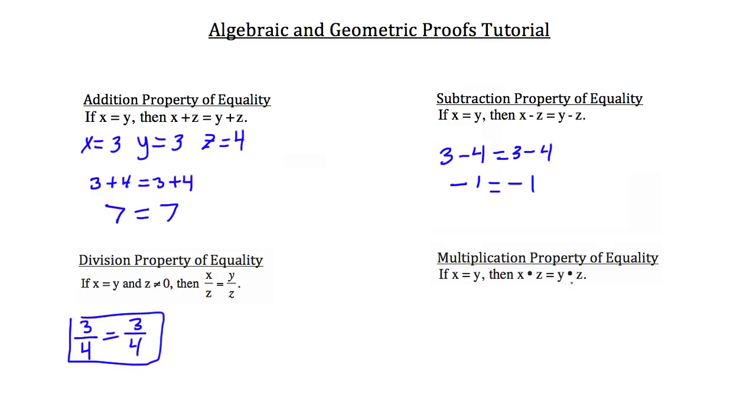And the multiplication property of equality? Same thing. We'll use the x, y, and z we've been using. So x times z, 3 times 4, must equal y times z, which is also 3 times 4, since x and y are equal. So 12 equals 12. Again, equal as they should be.